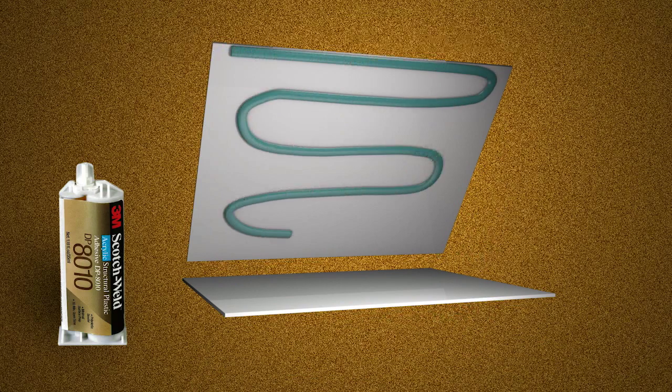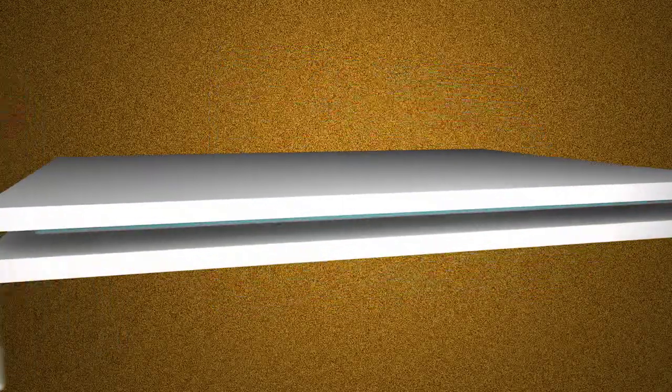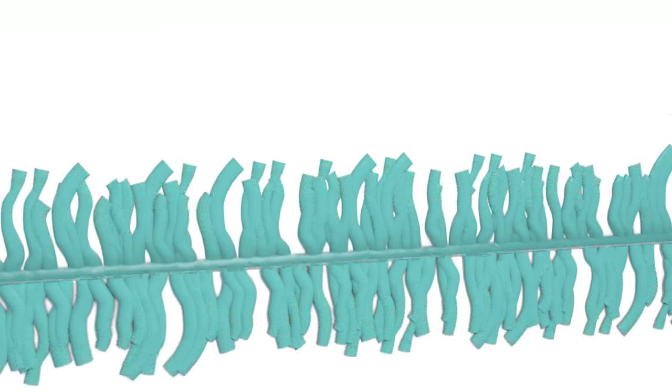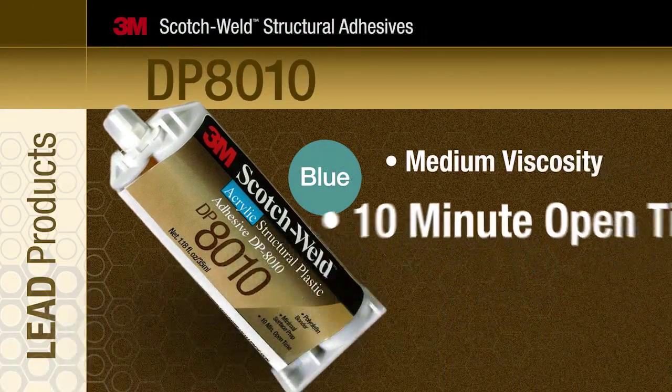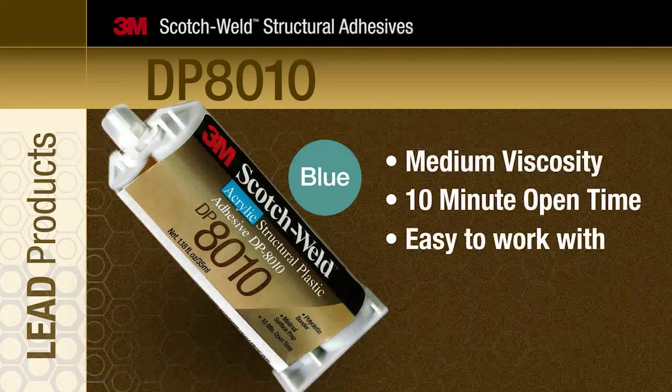The DP 8010 adhesive will attach low surface energy plastics to almost anything and hold it together like nothing else. Its medium viscosity and 10 minute open time make it easy to work with.